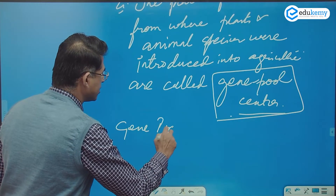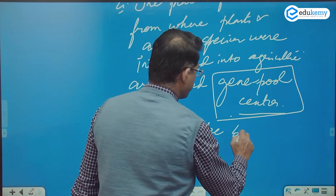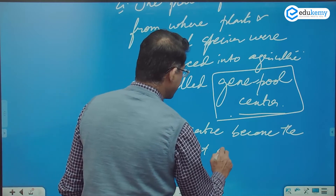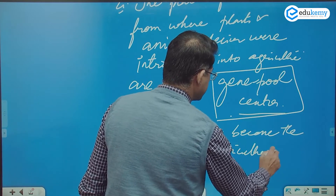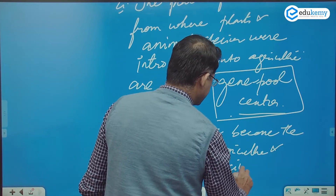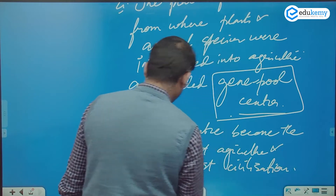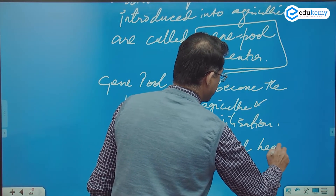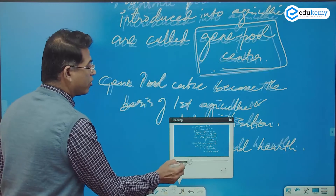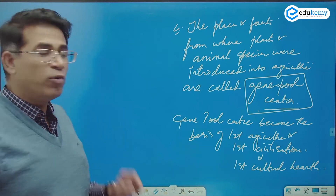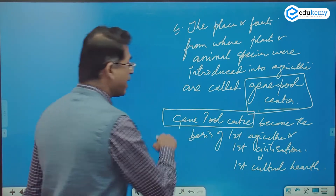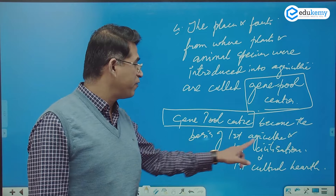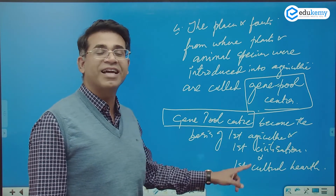The gene pool centers became the basis of first agriculture, the first civilizations, and the first cultural hearth. Are you all writing as I write and speak? The gene pool centers became the basis of the first agriculture, the first civilization, and the first cultural hearth.